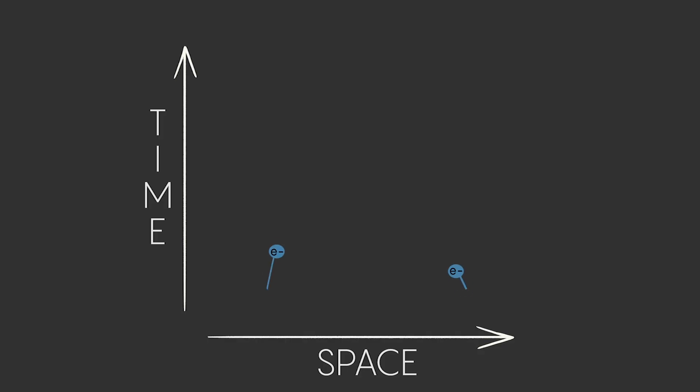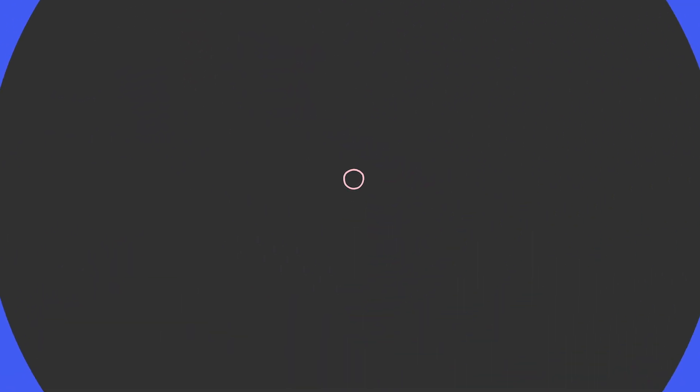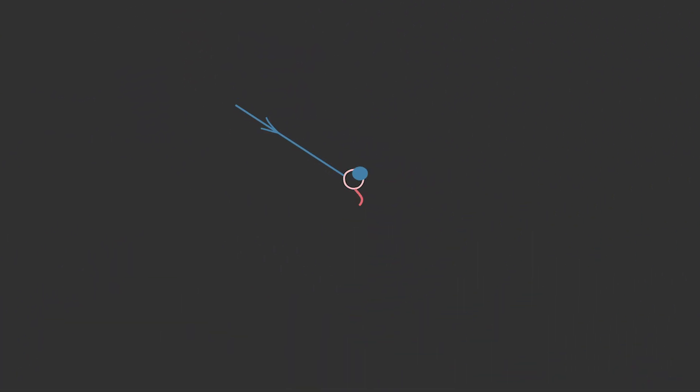Feynman's 1948 diagram was a simple visual way to account for, and ultimately quantify all the interactions. Think of this Feynman diagram as a story of a particle interaction in space and time.